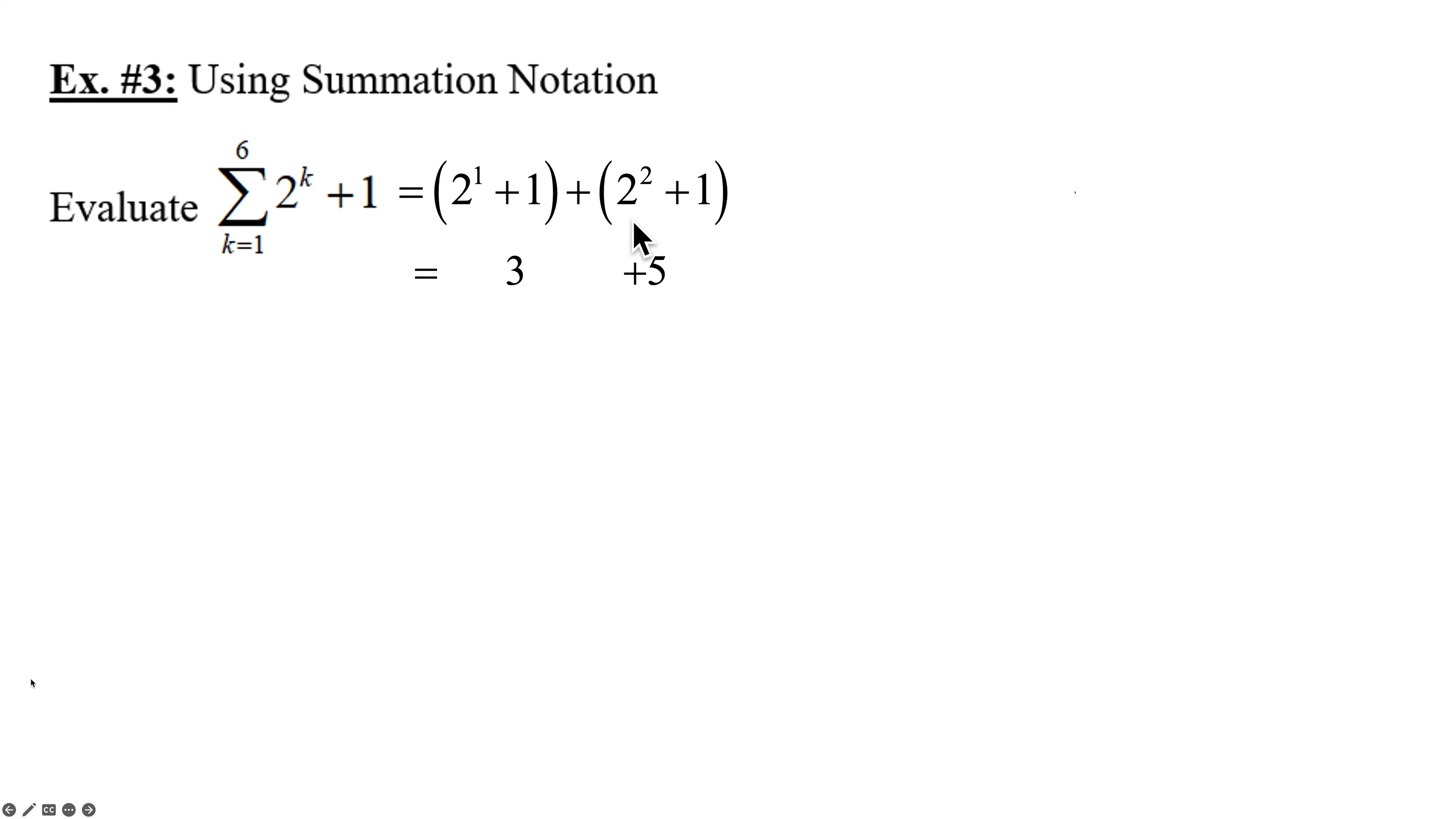My third term when k is 3, that will be plus 2 to the third plus 1 as my term. 2 to the third is 8 plus 1, that's plus 9. My next term is when k is 4. So plus in parentheses, 2 to the fourth plus 1. 2 to the fourth is 16 plus 1, plus 17. Then plus when k is 5, the binomial, 2 to the fifth plus 1. 2 to the fifth is 32 plus 1, that's 33. And then finally, plus 2 to the sixth plus 1, 64 plus 1 is 65. Then we'll add them together. The 5 and the 65, that's 70. The 17 and the 33, that would be 50. So 70 plus 50 is 120, 129, 132 is my sum.